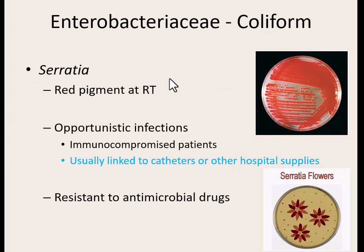The last of the coliform bacteria we'll discuss is Serratia. Interestingly, if you grow it on a regular nutrient plate without red blood cells, it grows red — the bacteria itself produces a really cool red pigment, making it very easy to identify. It doesn't generally cause a lot of issues for healthy individuals, but causes issues for immunocompromised patients. It's one of the top bacteria linked to catheter use, and it's becoming harder to treat because it's becoming resistant to many antimicrobial drugs and antibiotics.